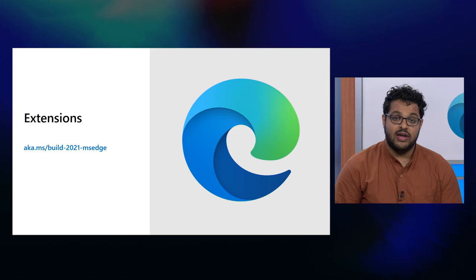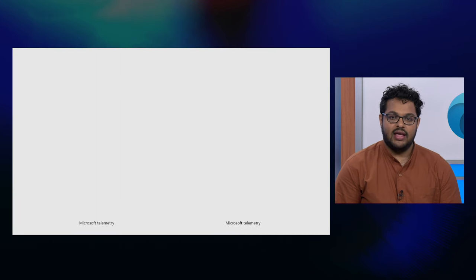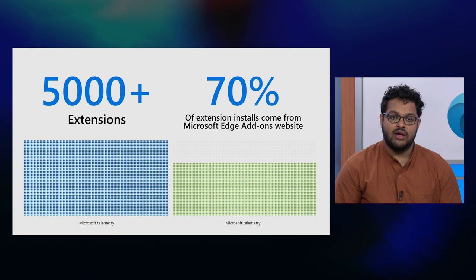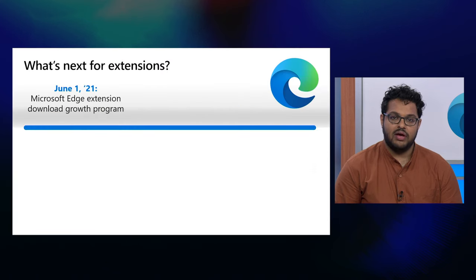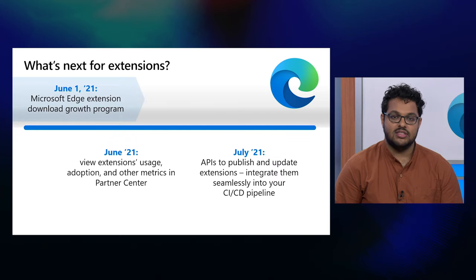We also have some exciting new announcements coming for developers that build extensions, also known as add-ons, for the Edge browser. The Edge add-on site is rapidly growing, and the best way to get your extension in front of Edge users is to submit it to the add-on site. Starting June 1st, we'll be promoting Microsoft Edge extensions with an incentive program for consumers, so publish your extension to the Edge add-on site by then to take advantage of it. We're continuing to improve the developer experience for extensions as well, with data about your extension available in the Partner Center later this June, and new APIs for publishing and updating extensions coming in July.